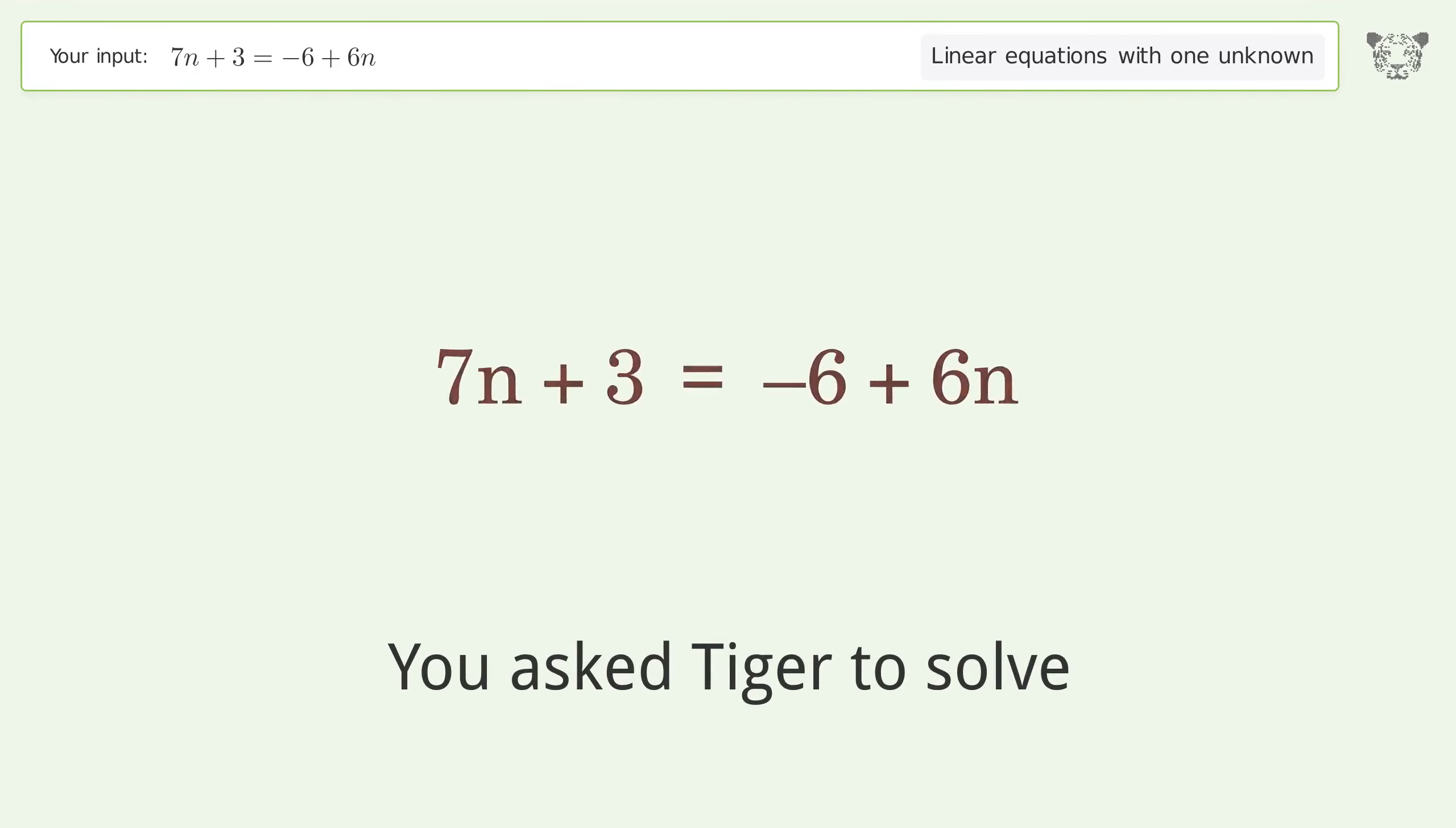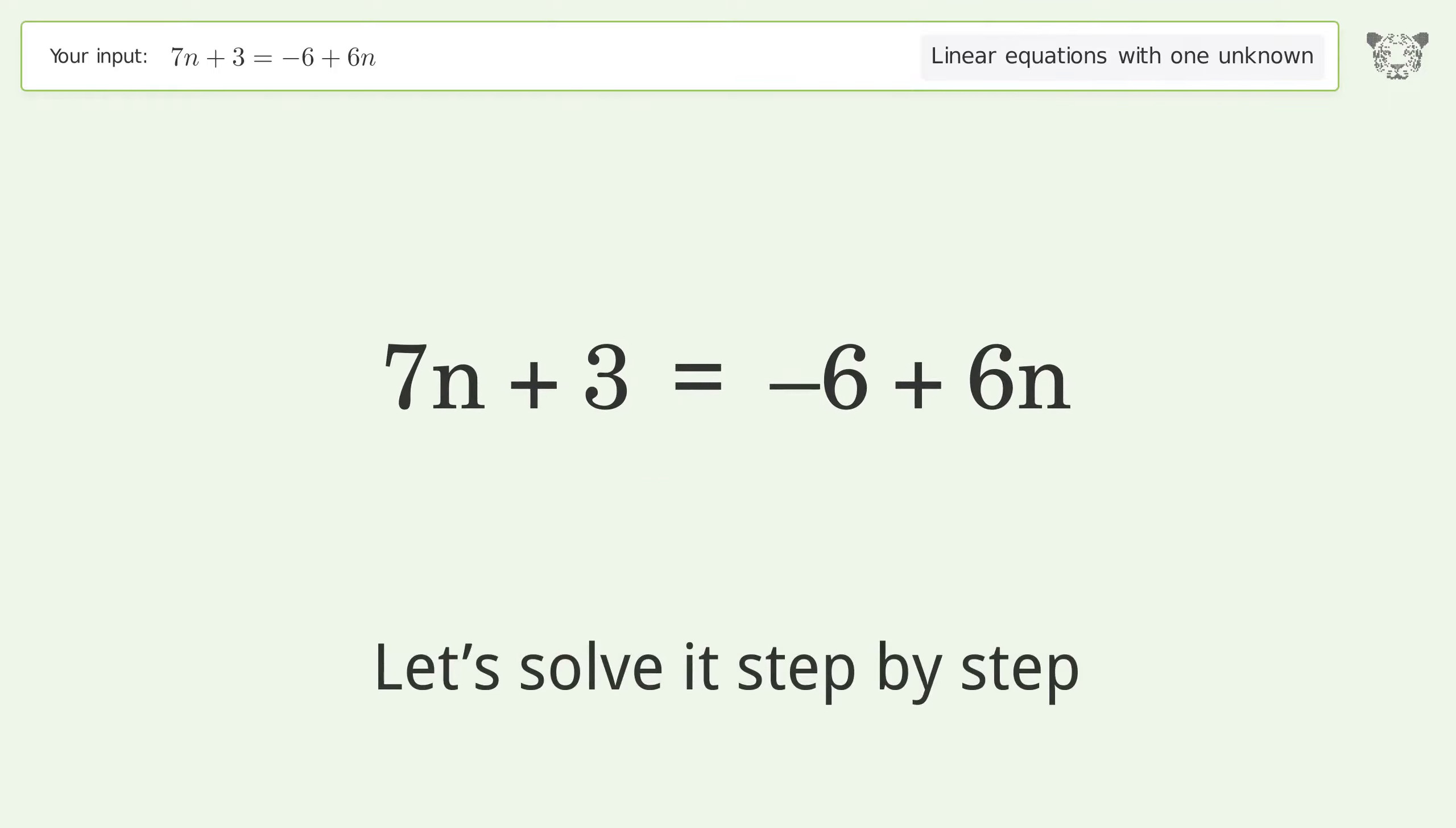You asked Tiger to solve. This deals with linear equations with one unknown. The final result is n equals negative 9. Let's solve it step by step.